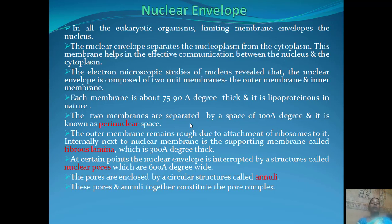The outer membrane remains rough due to the attachment of ribosomes to it. Next to the inner membrane is a supporting structure called the fibrous lamina, which is about 30 angstroms thick.